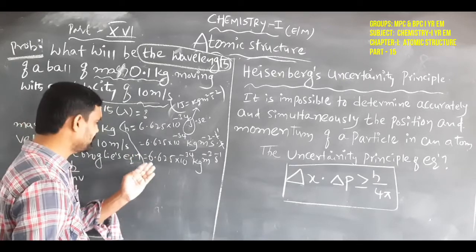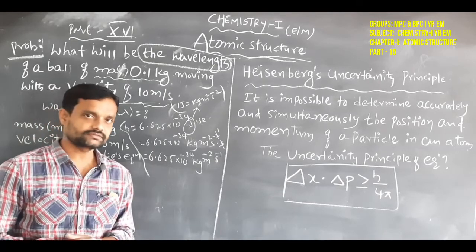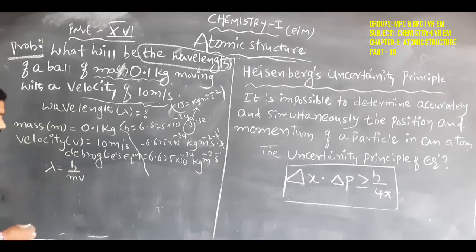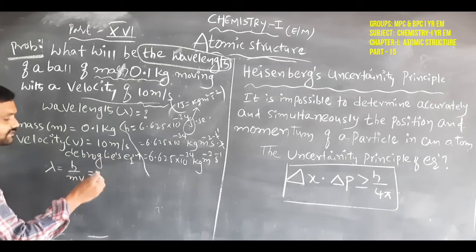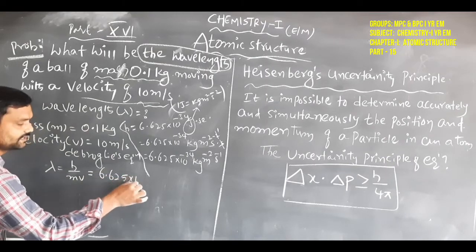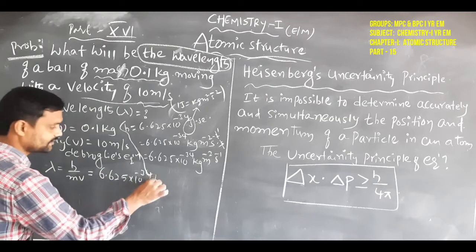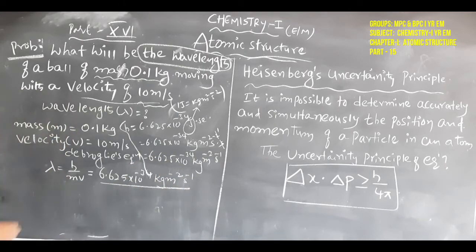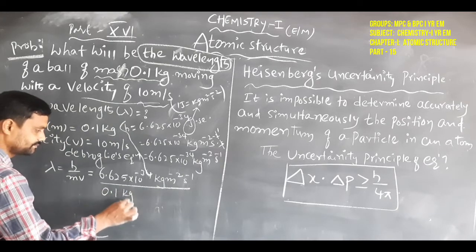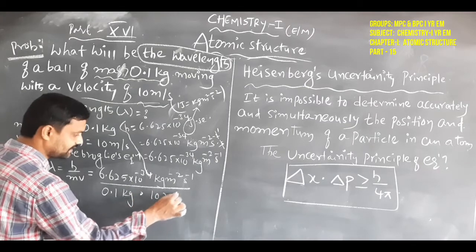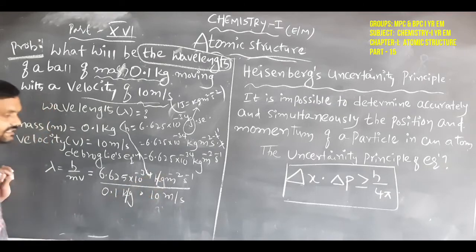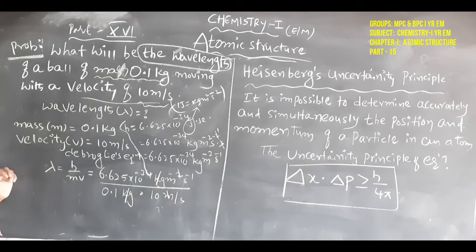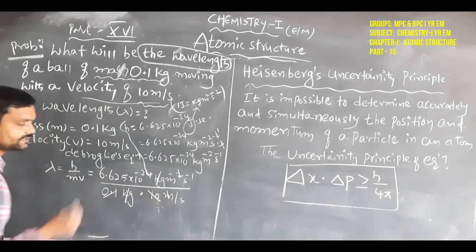Substituting the values into the formula: h = 6.625 × 10⁻³⁴ kg·m²·s⁻¹, divided by mass = 0.1 kg, times velocity = 10 m/s. The kg units cancel, one meter cancels, and 0.1 × 10 = 1 cancels in the denominator.